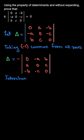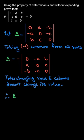So we'll go and interchange the rows and columns. Interchanging rows and columns does not change its value, therefore delta will be equals to minus delta.